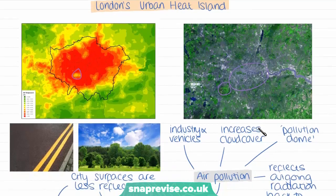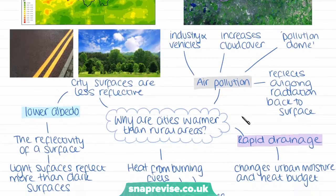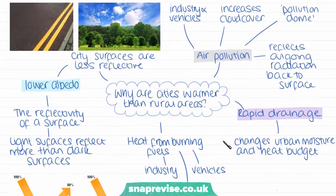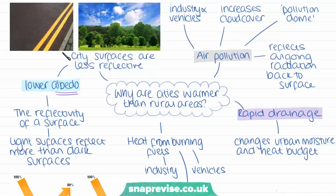Moving on to look at the causes for why cities are warmer than rural areas — this is primarily because of what we call the albedo effect, which relates to how reflective surfaces are. Surfaces in cities tend to be made of tarmac and concrete, and these are much darker and less reflective than the surfaces we find in rural areas in the countryside, such as trees and lakes and rivers, which are more reflective. So we say that surfaces in the city have a lower albedo, meaning that less radiation is reflected back into the atmosphere, and these surfaces absorb the heat and retain it rather than reflecting it back.